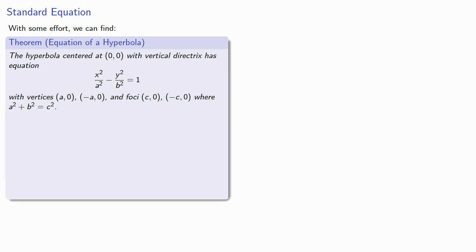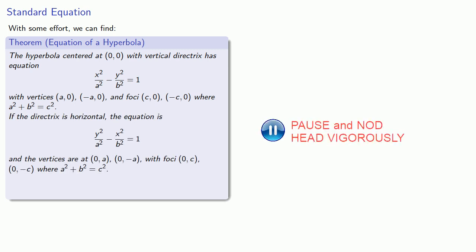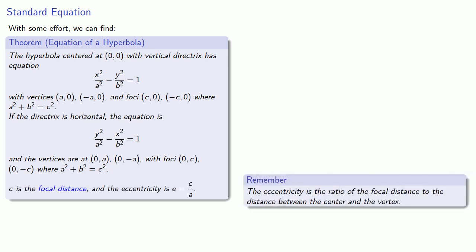Similarly, if our directrix is horizontal, we'll switch the x and y coordinates. As with ellipses, the distance from the center to the focus is the focal distance, and the eccentricity is the ratio of the focal distance to the distance of the vertex, c divided by a.